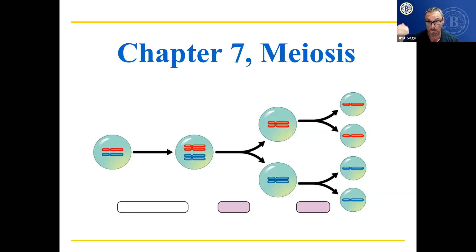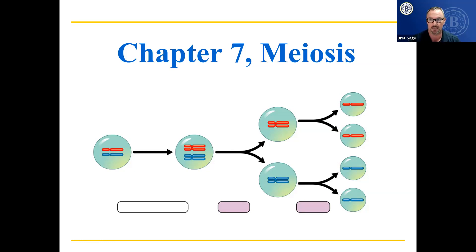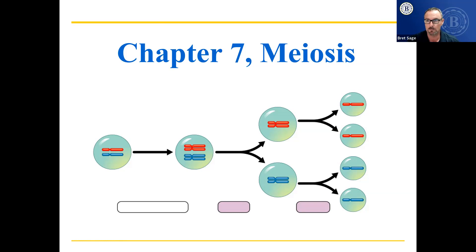That is significant because you need two people to make a baby. Both people's genetic information comes together, so you get to donate half. Your partner or spouse donates the other half, and then you have a baby. So this is all about making babies.